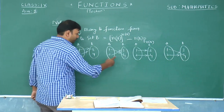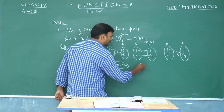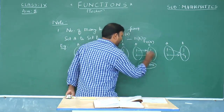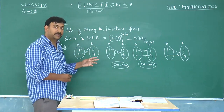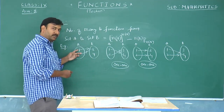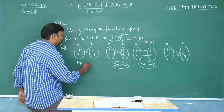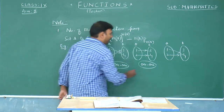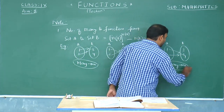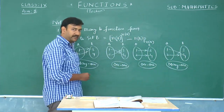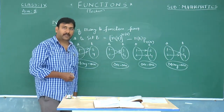Out of these four functions, two are going to be one-to-one functions, because distinct elements have distinct images. The other two functions have elements of set A mapping to the same image — therefore such functions are called many-to-one functions. So out of four total functions, two are one-to-one and the remaining two are many-to-one functions.